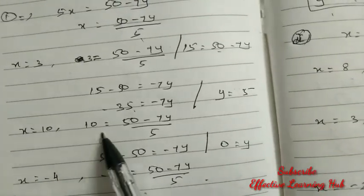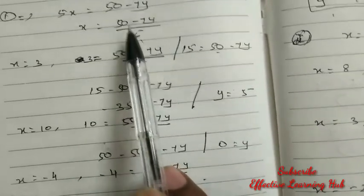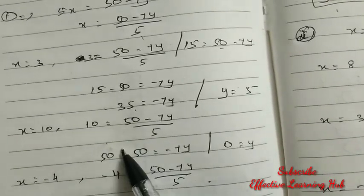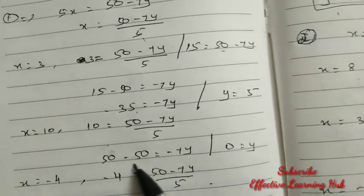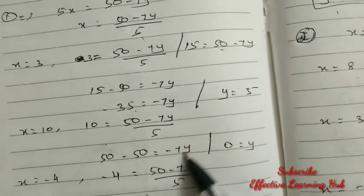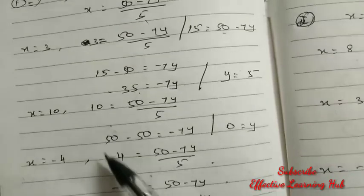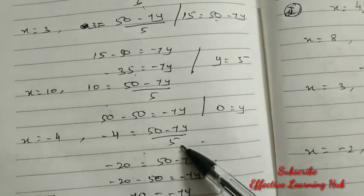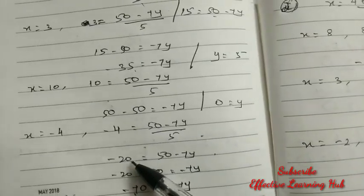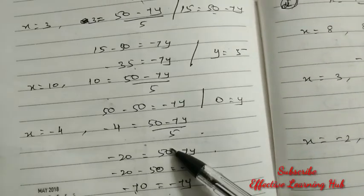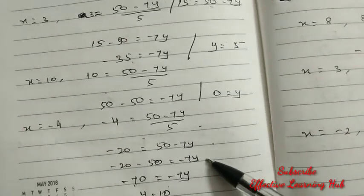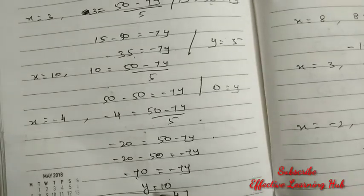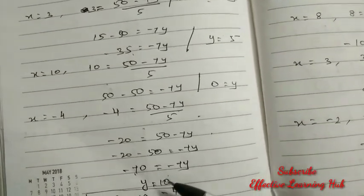For x equal to 10: substitute in equation 1. 10 equal to (50 minus 7y) divided by 5. Cross multiply: 50 equal to 50 minus 7y. So 50 minus 50 equal to 7y, giving y equal to 0. For x equal to minus 4: minus 4 equal to (50 minus 7y) divided by 5. Cross multiply: minus 20 equal to 50 minus 7y. So minus 20 minus 50 equal to minus 7y, giving minus 70 equal to minus 7y, so y equal to 10.